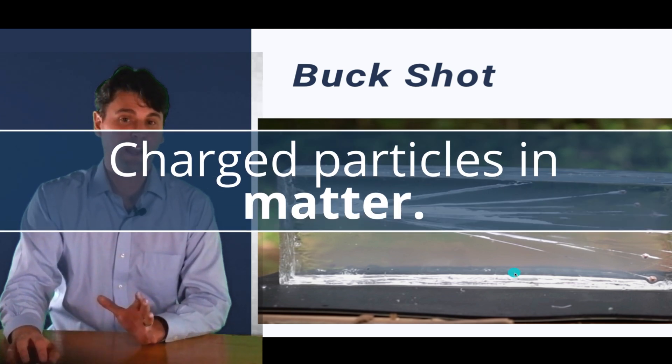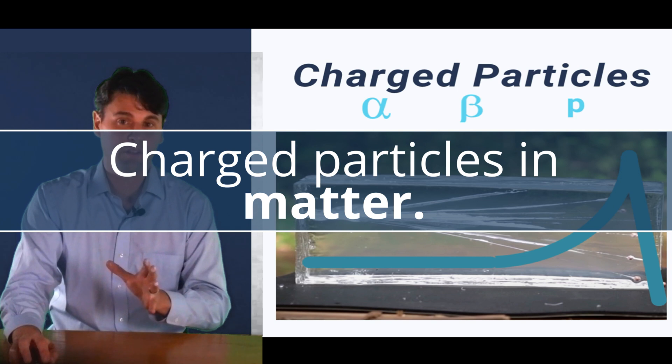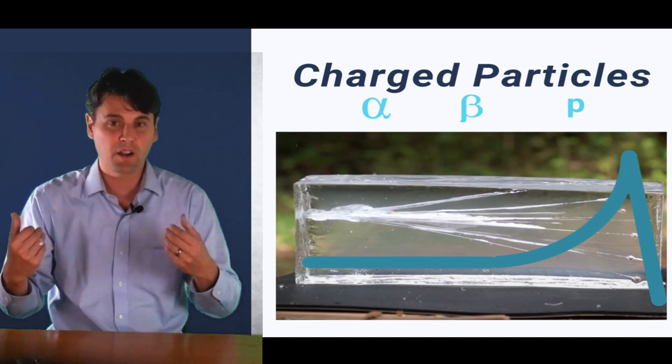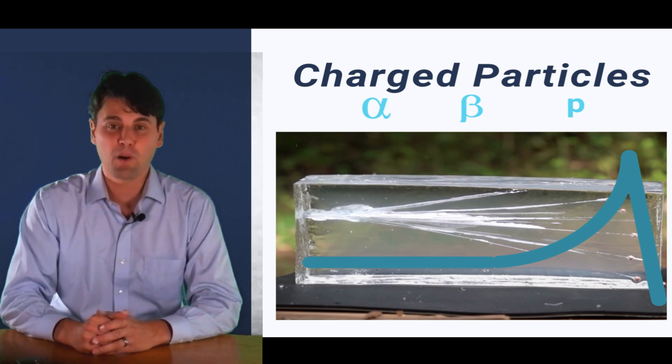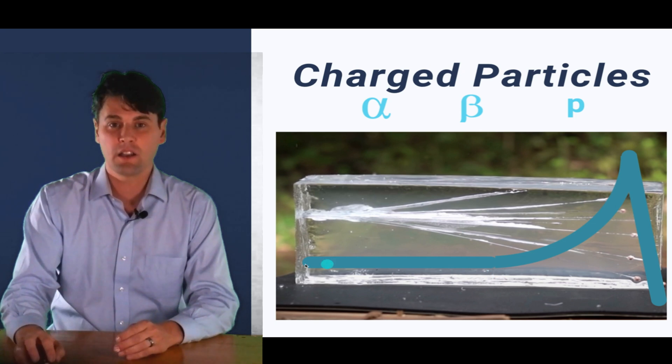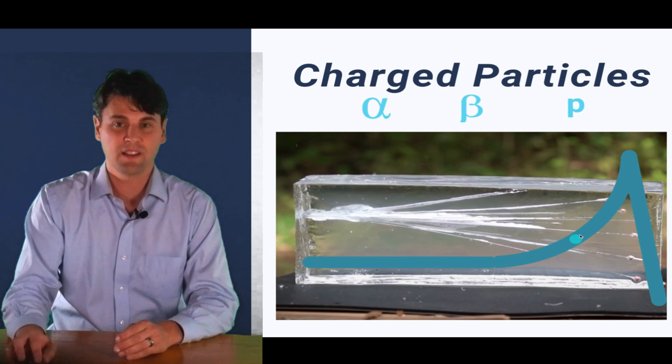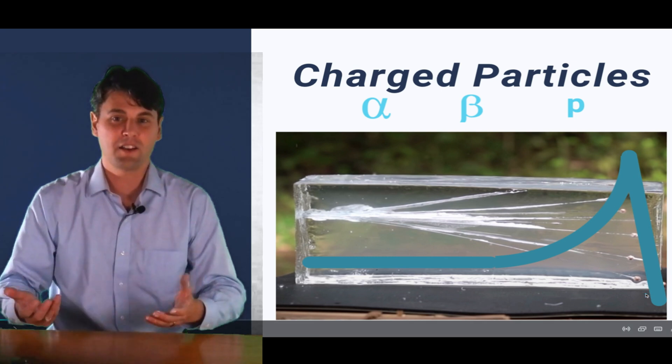This same type of thing happens with charged particles as they're going through matter. For instance, if you had alpha particles or electrons that we call betas, or if you had protons, as they're going through the matter, they're going to continually be depositing energy, or dose in this case, until the very end. This is what's called the Bragg peak, where they will then deposit basically all of their energy.